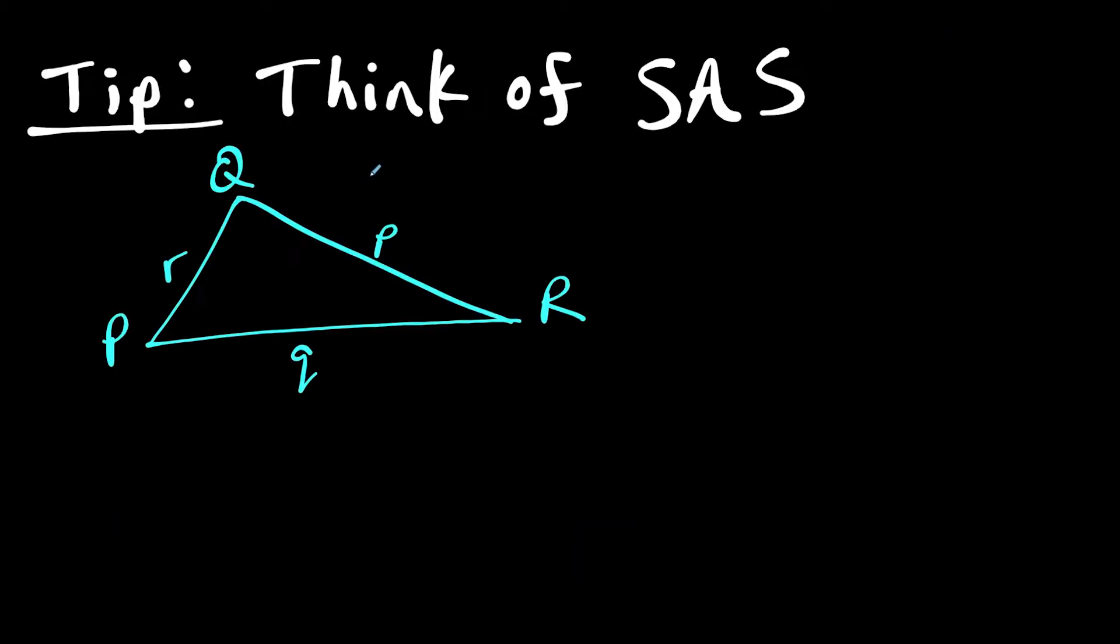Now first I want to go through this tip to think of side-angle-side when you're using the law of cosines because the most common mistake I see is that people struggle just to set up the formula. So what I mean by that is let's say I focus on side P and side Q and notice that angle R is between them.